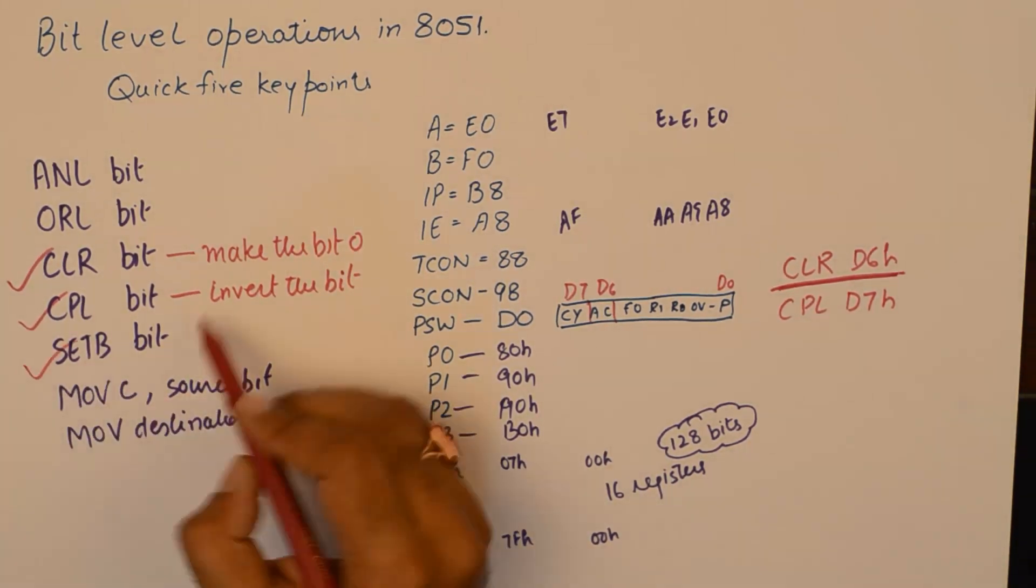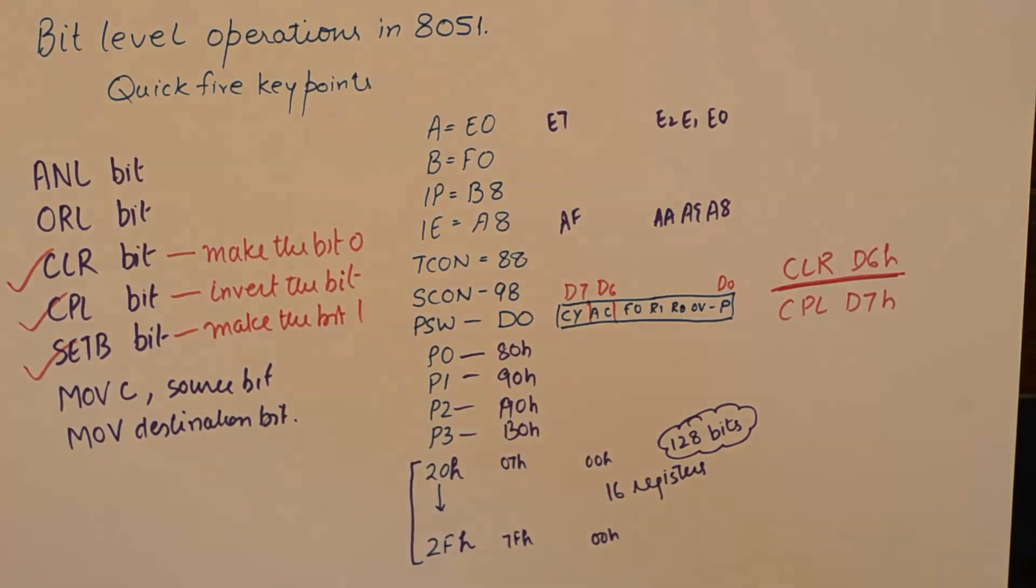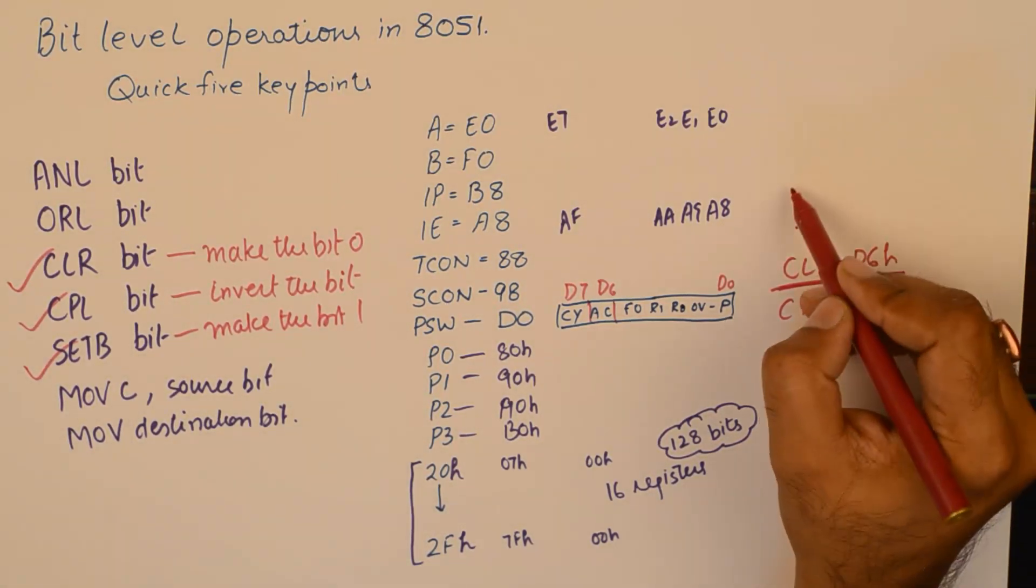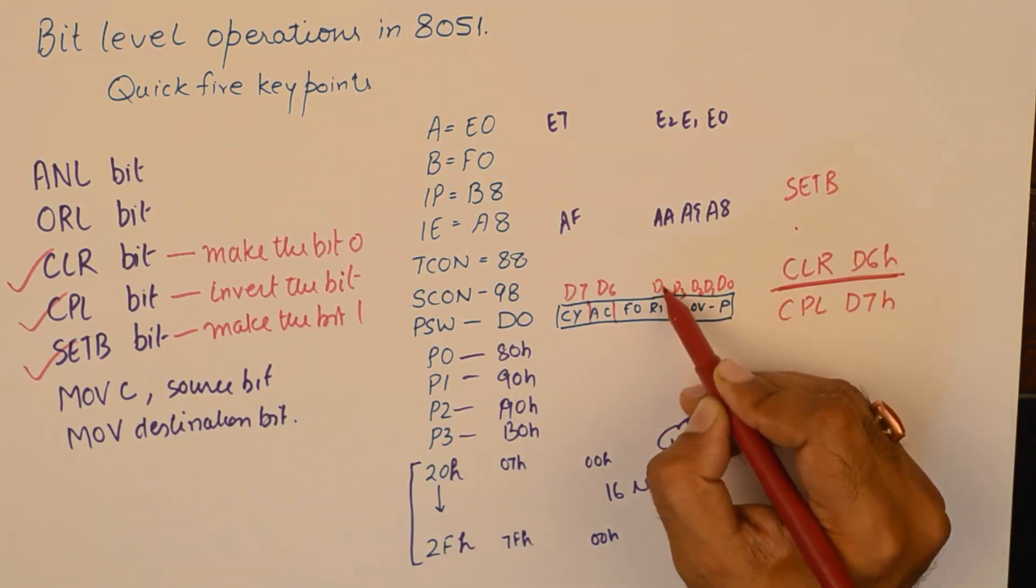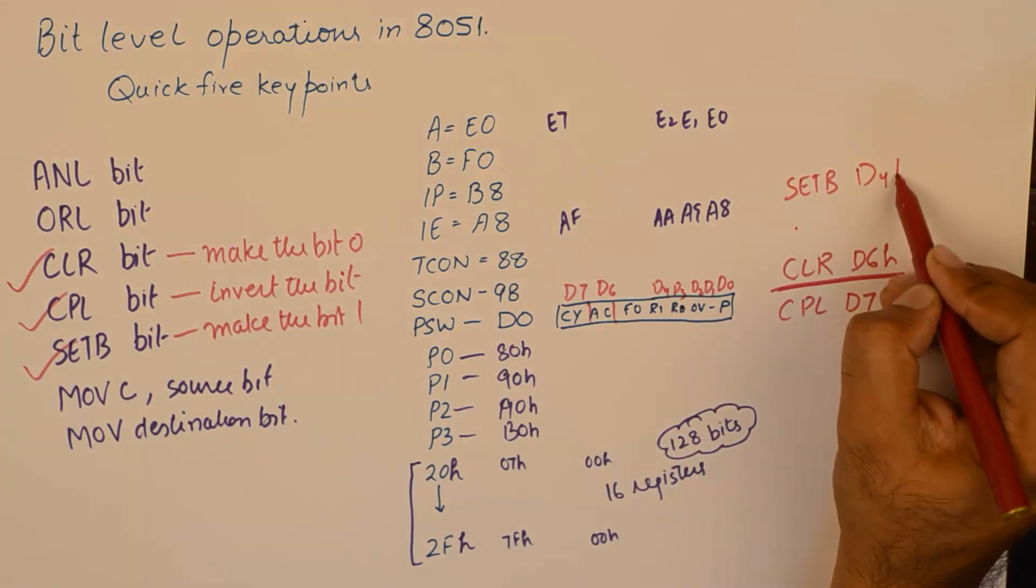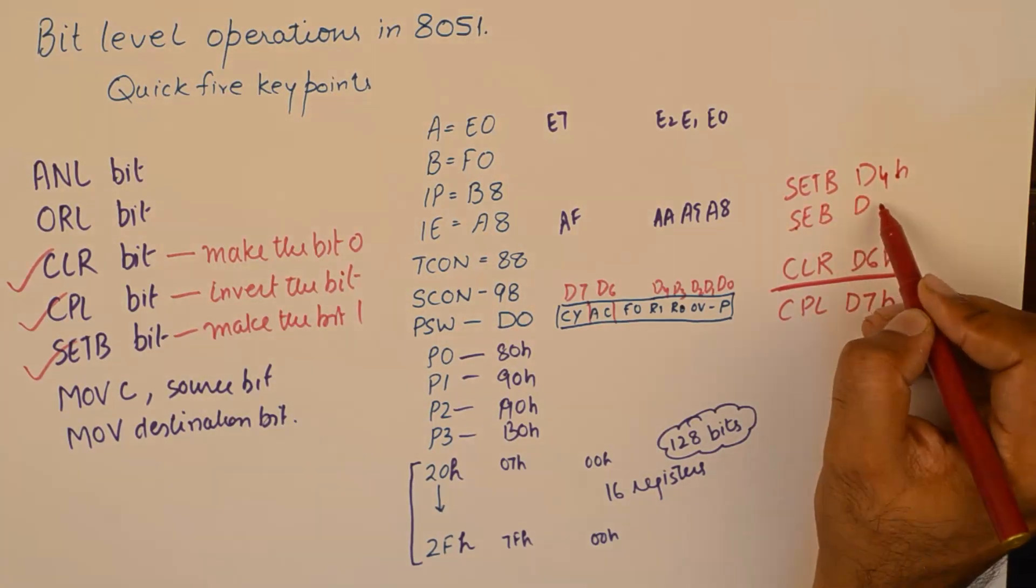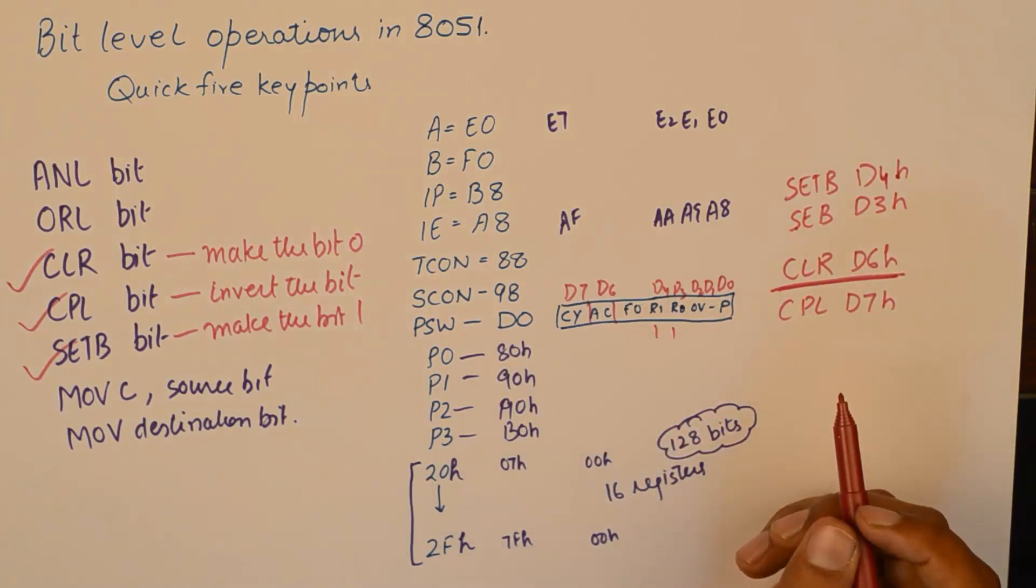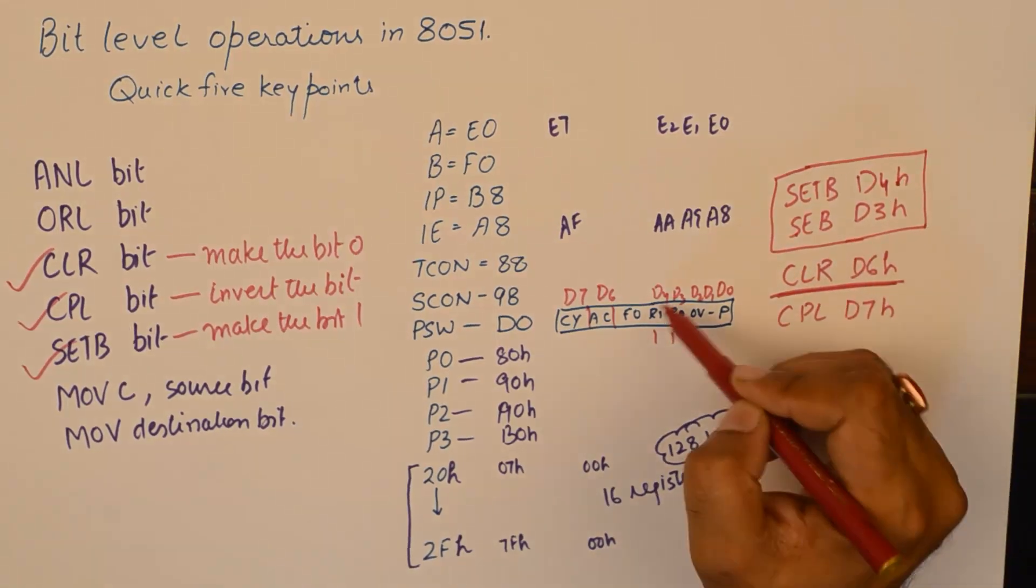And similarly, set bit will make the bit 1. We could take any random example. If I say SETB D4H, SETB D3H, this is going to make these two bits as 1, which will eventually select the register bank 3. So that is how we select the register banks by setting or clearing these two bits.